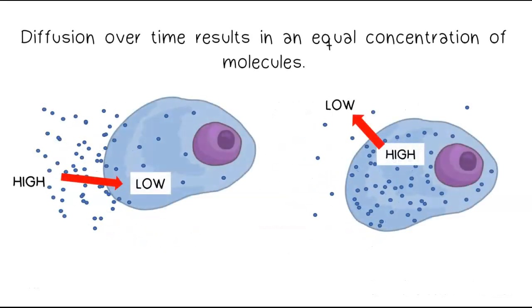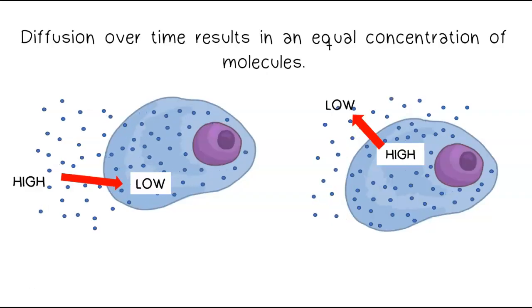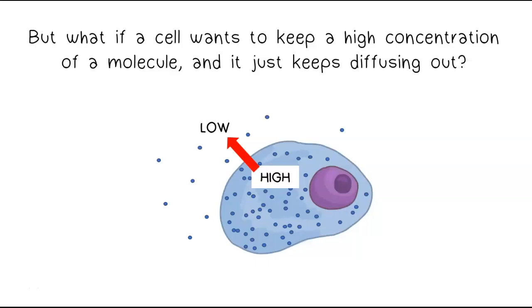Diffusion over time results in an equal concentration of molecules. But what if a cell wants to keep a high concentration of a molecule, and it just keeps diffusing out?